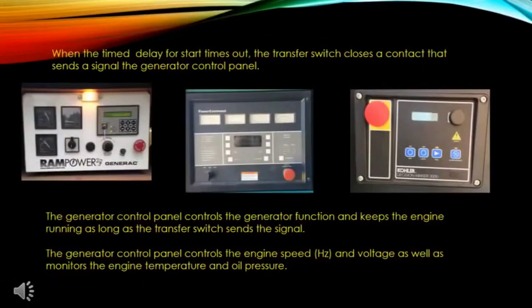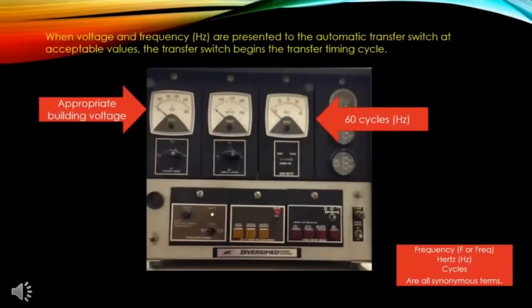The generator control panel controls the generator function and keeps the engine running as long as the transfer switch sends the signal. It controls engine speed and voltage, and monitors engine temperature and oil pressure. When voltage and frequency are presented to the automatic transfer switch at acceptable values, the transfer switch begins the transfer timing cycle. Your control panel should display the appropriate voltage and frequency.